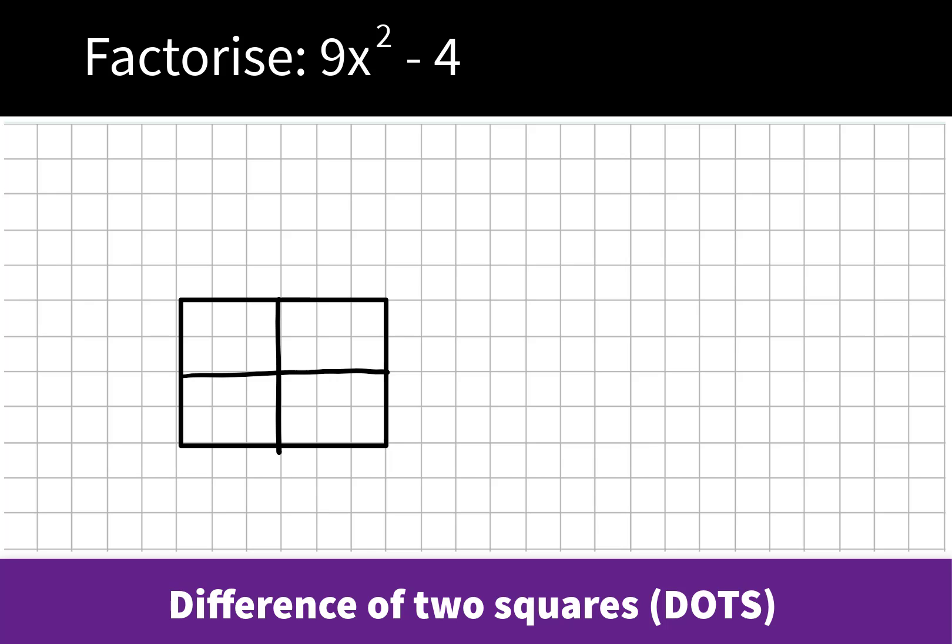Factorize 9x squared minus 4. We might recognize this as the difference of two squares. This is because 9x squared can be expressed as 3x multiplied by 3x, or 3x squared, and negative 4 is negative 2 multiplied by 2, or negative 2 squared.